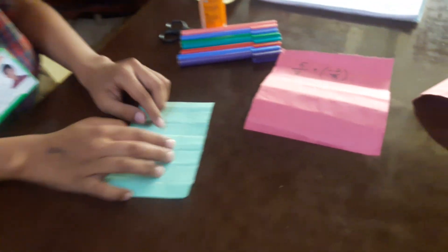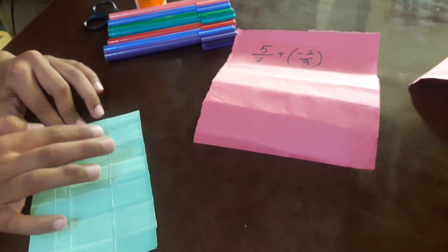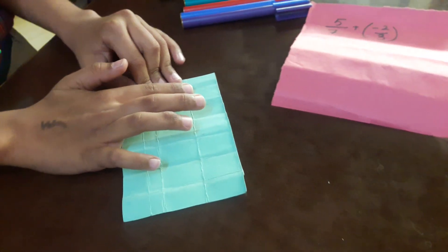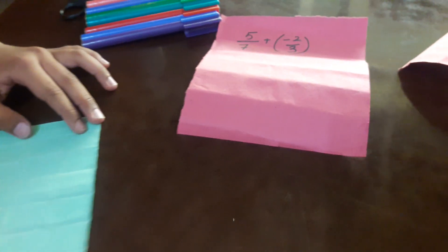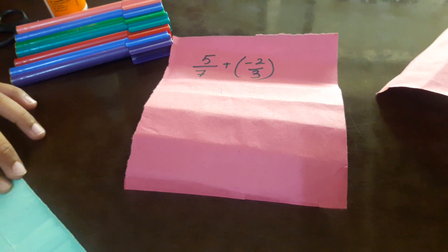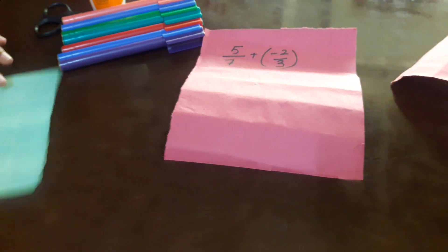Then we have minus 2 by 3. Then we will divide it into 3 equal rows, 3 equal rows horizontally because the denominator of second rational number is 3. Then pass that sign.